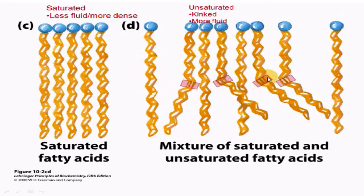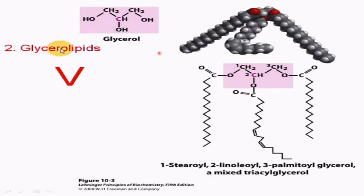If there is a double bond, it produces a kink in the structure of the fatty acid. So there is no kink in the saturated fatty acid, so they are more densely packed and less fluid. Whereas in case of unsaturated fatty acids, the double bond produces a kink, so they are not densely packed, resulting in more fluidity.